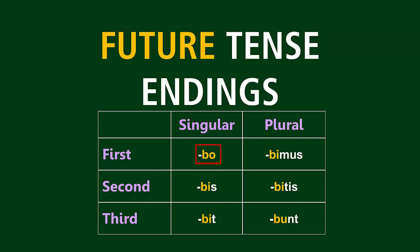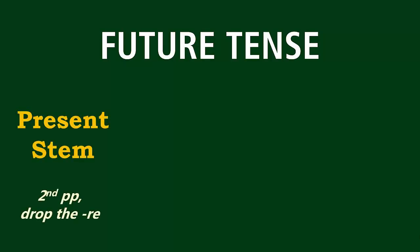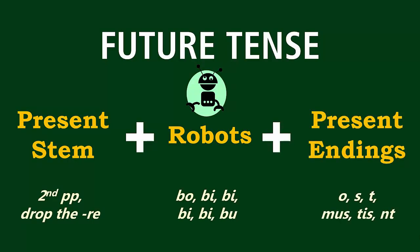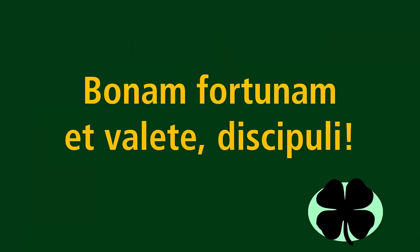Alright, just like last time, we'll take a look at the chart of endings and figure out how to translate them next time. Meanwhile, you can work with them yourself in the exercises after the video. Remember, the future tense is formed by finding the present stem, adding the robots, and then using the same O-S-T-Moose-T's anti-endings that we're already getting very used to by now. Bono Fortuno et vale et te, discipuli.